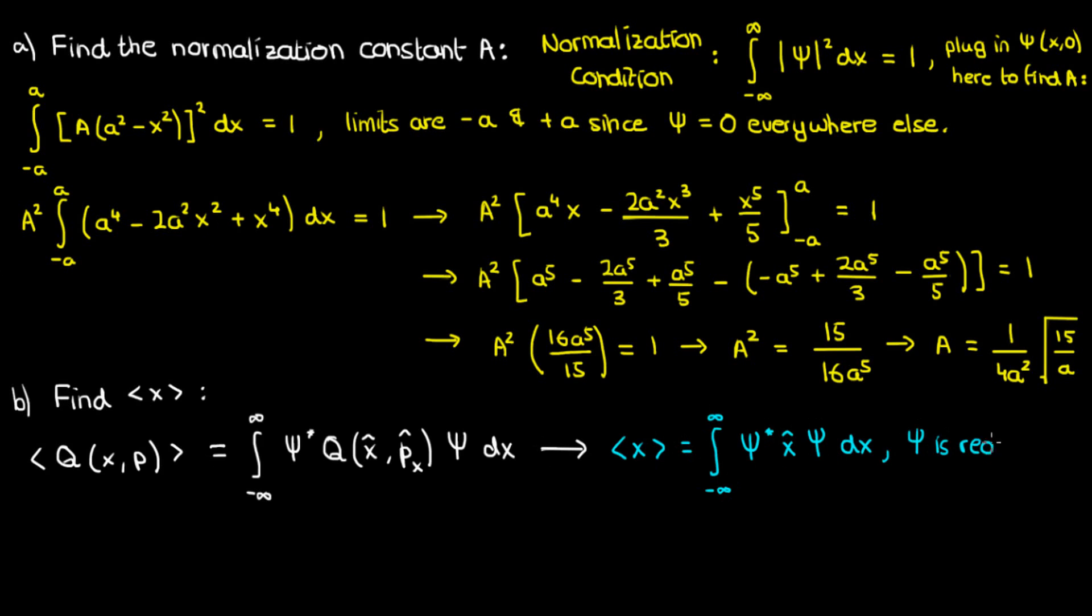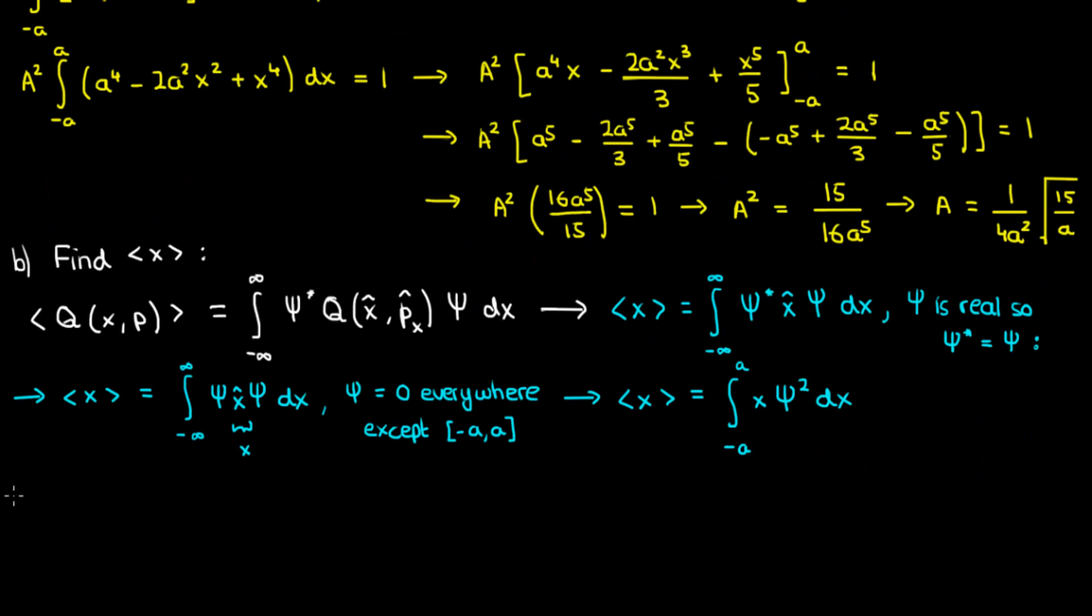Now ψ is a real function, so the complex conjugate of ψ is just ψ, which means we can simplify our equation. The operator x̂ is just the scalar x, and ψ is only non-zero between -a and a. Once we plug in x̂ = x and change our limits, we have the following equation. Plugging in ψ² and simplifying yields this equation. I won't meticulously evaluate this integral since it's pretty easy. But when you evaluate it,